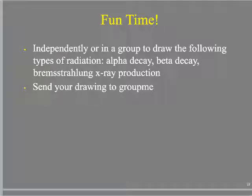For today's activity, you can either work independently or in a group to draw the following types of radiation: alpha decay, beta decay, and Bremsstrahlung x-ray production. You can draw them in cartoon form, use your textbook or the internet. I'll give you about 15 minutes.